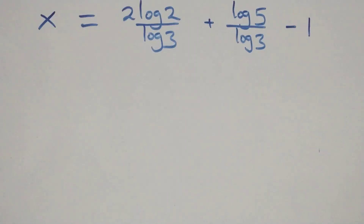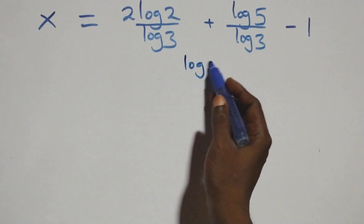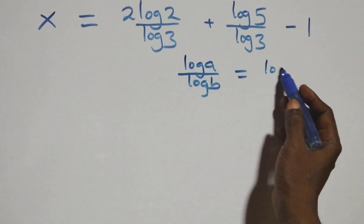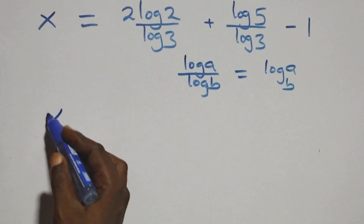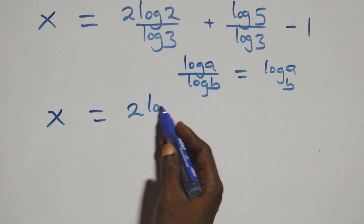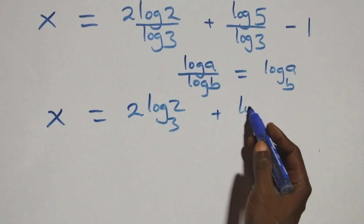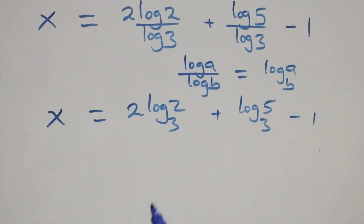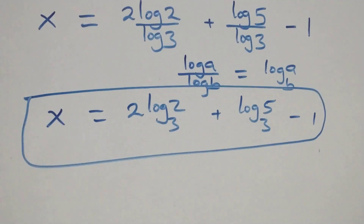Then the next step: we apply the change of base rule. When we have log a over log b, this is the same thing as log a to base b. So here we have x equals 2 log 2 base 3 plus log 5 base 3 minus 1. That is the value of x: 2 log₃2 + log₃5 − 1.